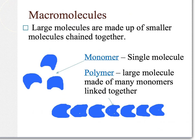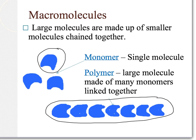A macromolecule is a large molecule made up of smaller molecules chained together. We call those small molecules a monomer, which would be a single molecule. And when they're all linked together, we call that a polymer — the large molecule made up of many monomers linked together. Breaking down those words: mono means one, a single unit, and poly means several. So we have several monomers linked together.